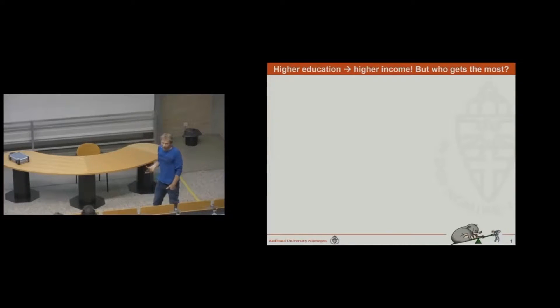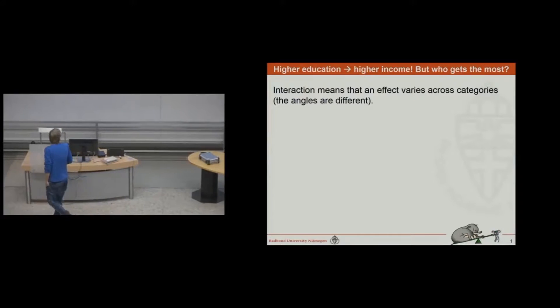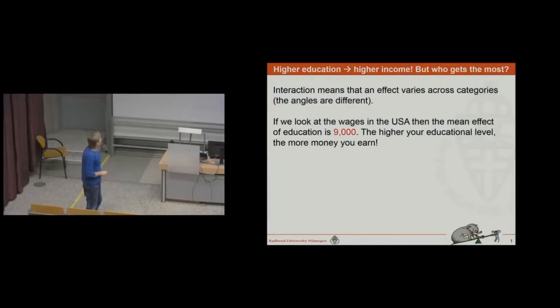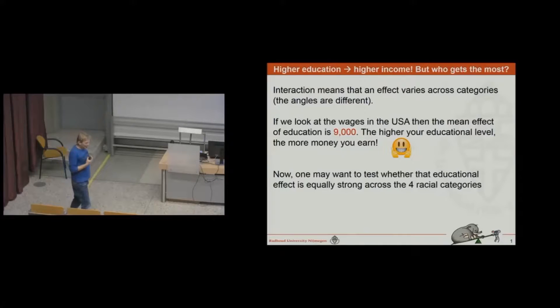The example is education. We know that if you have a higher education you will have higher income, but the question is who gets the most. So interaction means that the effect of education varies across the categories, the four racial categories. If you look at the wages in America we see that the main effect of education is about nine grand. That means if you move from one educational level to the other you get an extra $9,000 on a yearly basis. So the higher the educational level the more money you will earn.